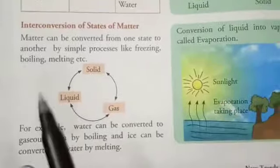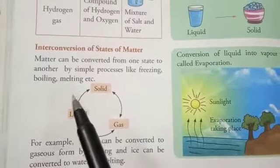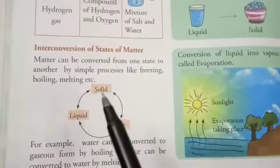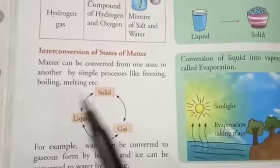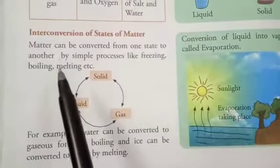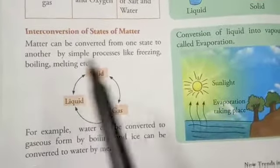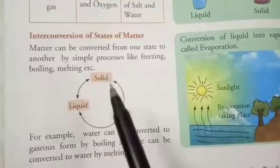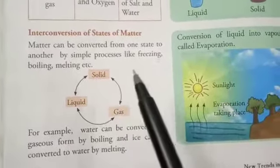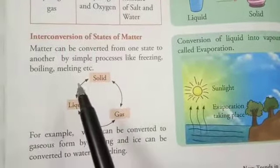Now we will study interconversion of states of matter. We have studied states of matter — which matter exists in which state. Solid, liquid, and gas. Matter can be converted from one state to another by simple processes like freezing, boiling, and melting. We can freeze it, boil it, and melt it.